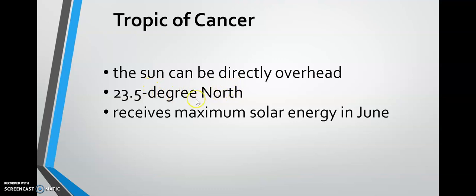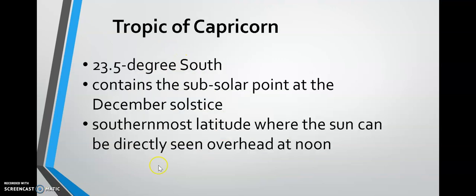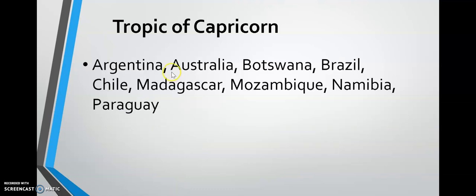For the tropic of cancer, the sun can be directly overhead. It is at 23.5 degrees north and receives maximum solar energy in June. It passes through several countries. For the tropic of capricorn, it is at 23.5 degrees south and contains the sub-solar point at the December solstice. It is the southernmost latitude where the sun can be directly seen overhead at noon. It also passes through several countries.